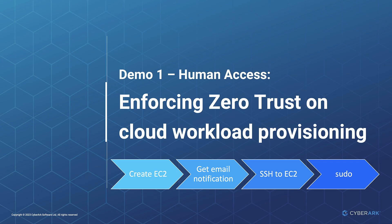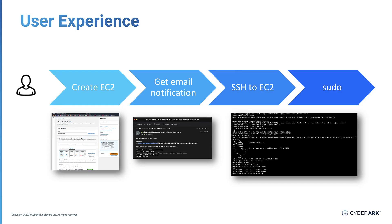Now, let's examine what a successful enforcement of human access to cloud resources might entail. For our first demonstration, we will provision cloud resources such as AWS EC2 with a cloud-native user experience while simultaneously enforcing secure access and controls automatically. Users can create an AWS EC2 instance via the AWS Management Console. After the instance is ready, the user will receive an email with instructions on how to connect to it using native protocols such as SSH.